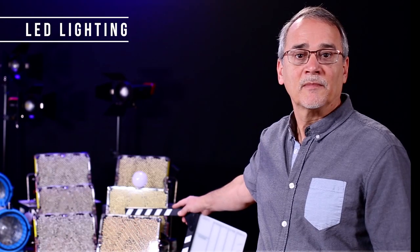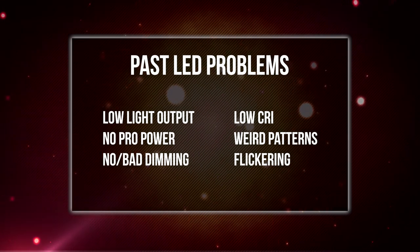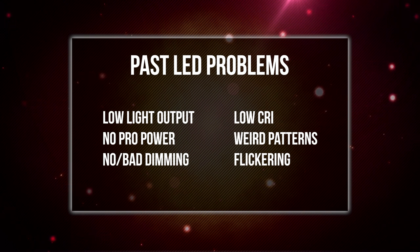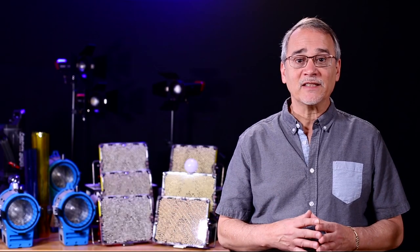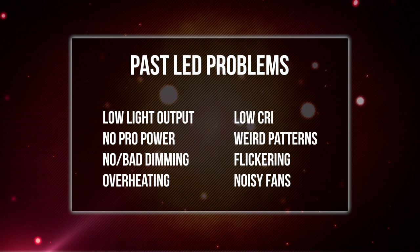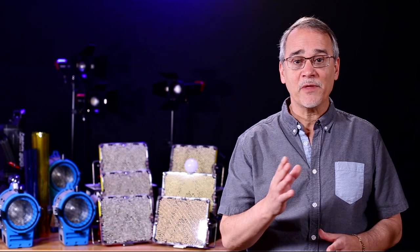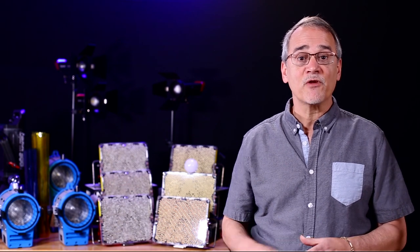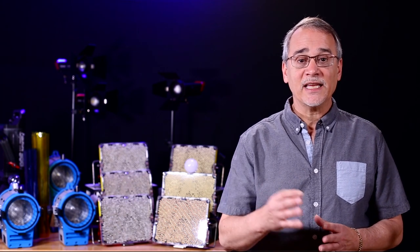LED lighting. LEDs have had their problems, such as not enough power to provide high light output, low CRI values, inability to support pro power options, weird patterns given off by the lights, no or terrible dimming, bad flickering, and so on. As the power of these lights increased, they had a problem with cooling — so then they added fans, and there was noise, and they just overheated and failed. Until recently, I stayed away from LED lights for all those reasons. That's not the case anymore if you buy high quality LED lights, which is why I've switched almost all my lighting to LED.